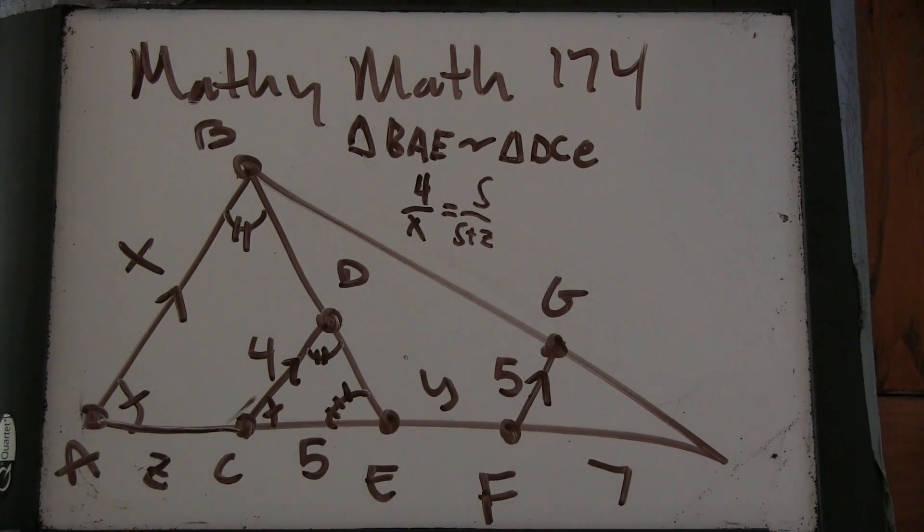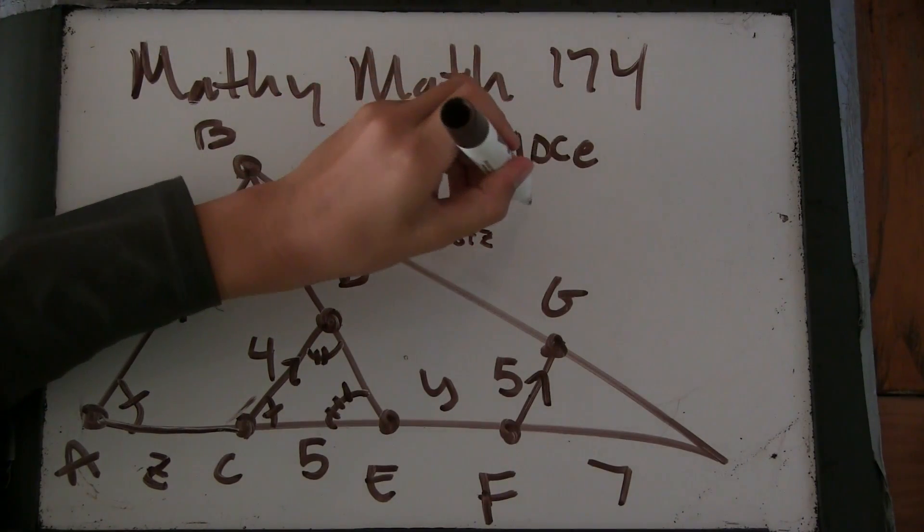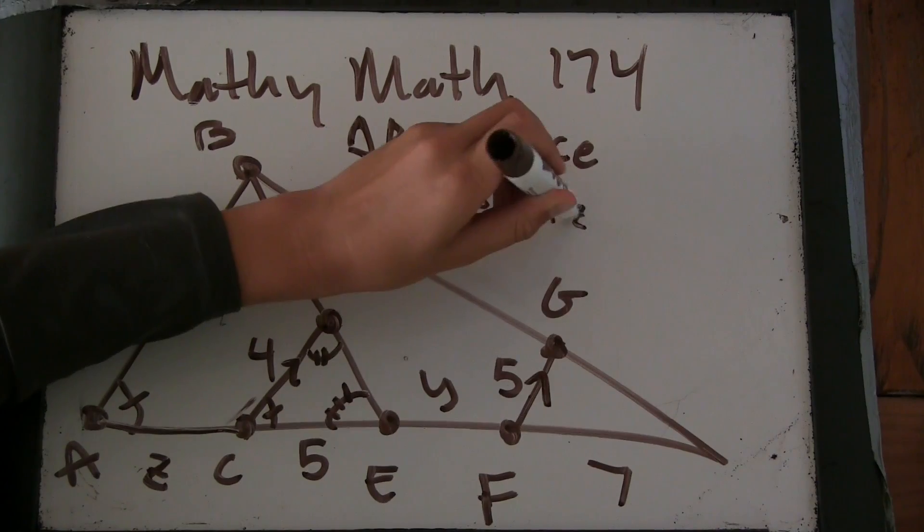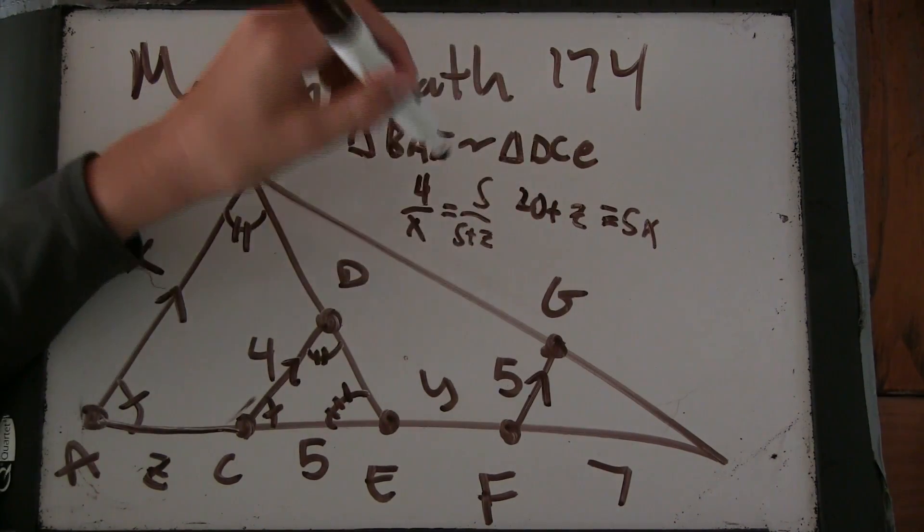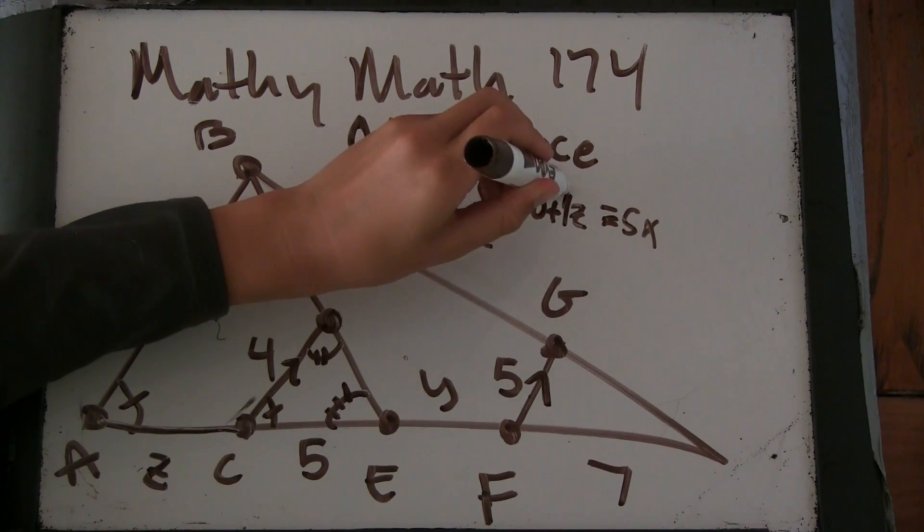So that's saying that distance to that distance is the same as that distance to that distance. So you can use this to solve for Z in terms of X. So what's that going to say? 20 plus Z is 5X. No, 20 plus 4Z.